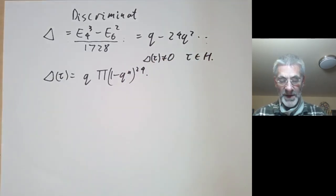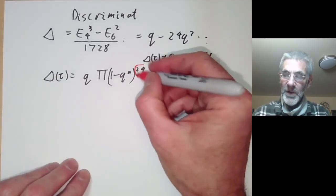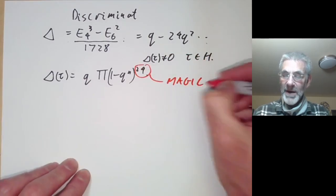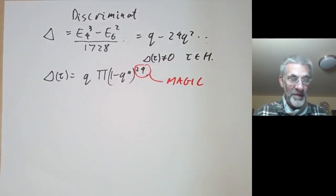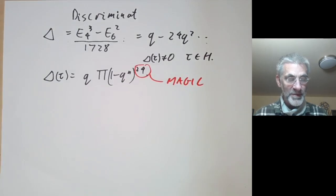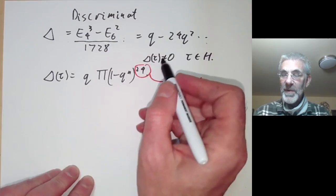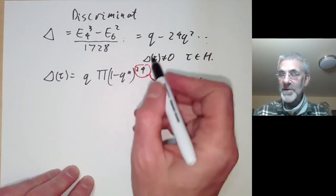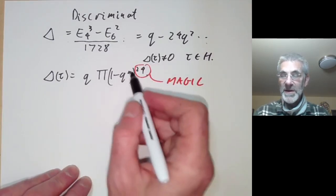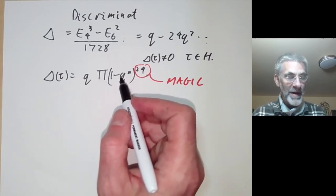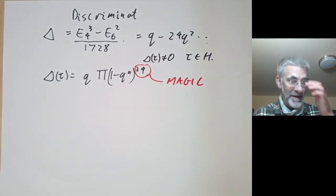This number 24 is a sort of magic number that keeps appearing in the theory of modular forms. Incidentally, this infinite product explains why the discriminant function is non-zero, because this infinite product converges to a non-zero number in the entire upper half plane.